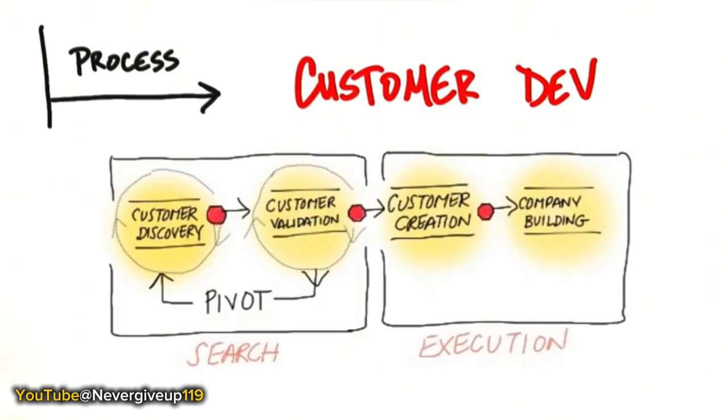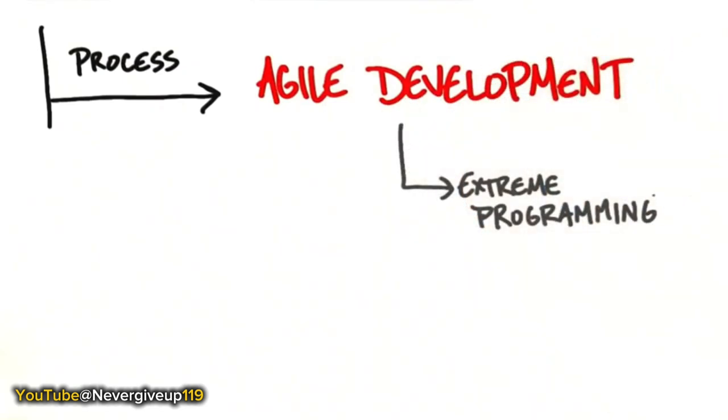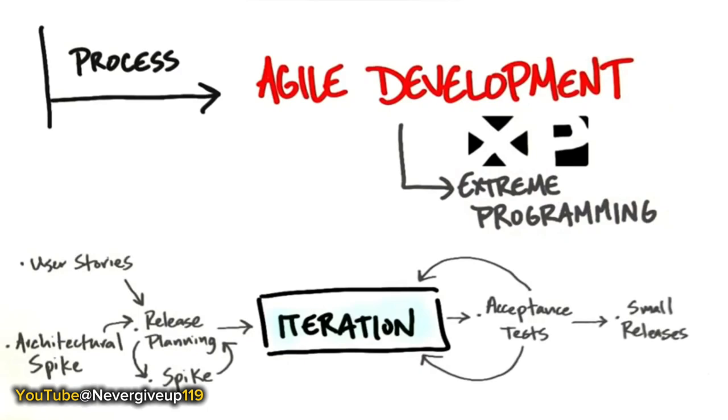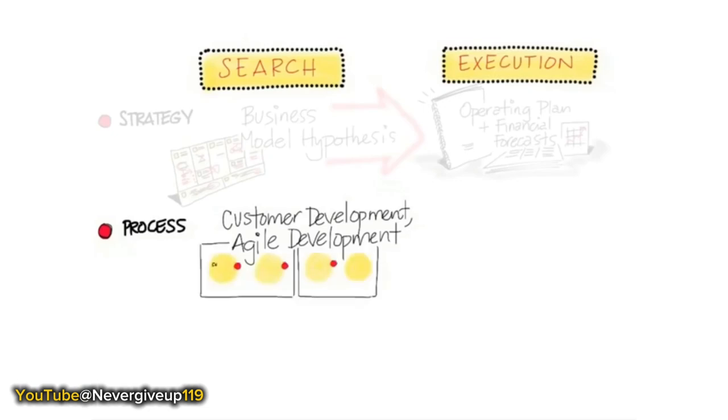The other piece that goes with the process in a startup is not only the customer development process, but an agile engineering process. One example is Extreme Programming, or XP, which is built around this idea of iteration and incremental delivery of the product. This is a big idea. It says instead of building every possible feature on day one, we're actually going to incrementally and iteratively interact with customers, test each portion of the product, and see if what we're building actually has a home outside the building.